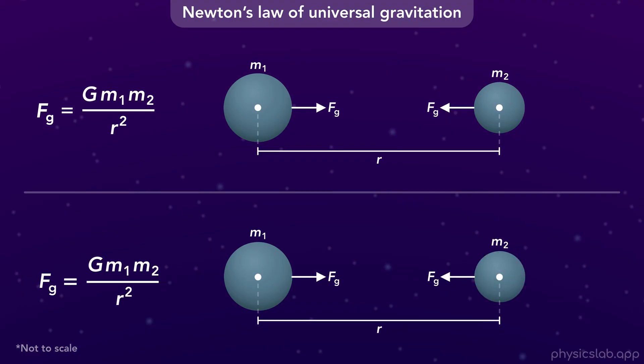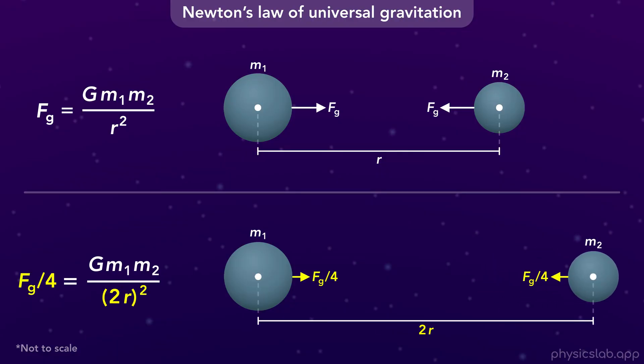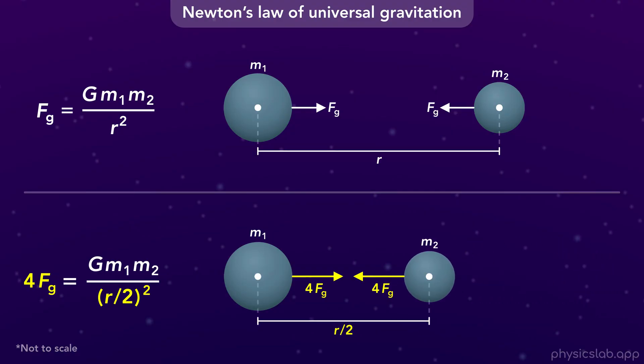What if we change the distance between the two objects? If we double R, it's squared in this equation and it's in the denominator, so the gravitational force is actually divided by 4. The gravitational force is weaker when the objects are farther apart. And if we divide the distance by 2, then the gravitational force is multiplied by 4. So the gravitational force is stronger when the objects are closer together.